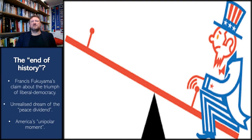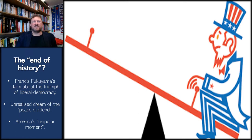For the United States, victory in the Cold War saw much hubris about the superiority of liberal democracy and capitalism, most famously encapsulated in a book by Francis Fukuyama called The End of History and the Last Man. There was much talk of peace dividends — the economic benefits of not having to engage in the costly arms race — but the peace dividend turned out to be untrue. The US found itself in a unipolar moment as the world's sole superpower.